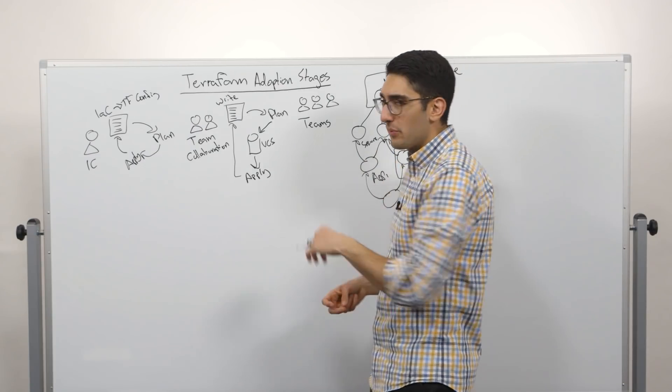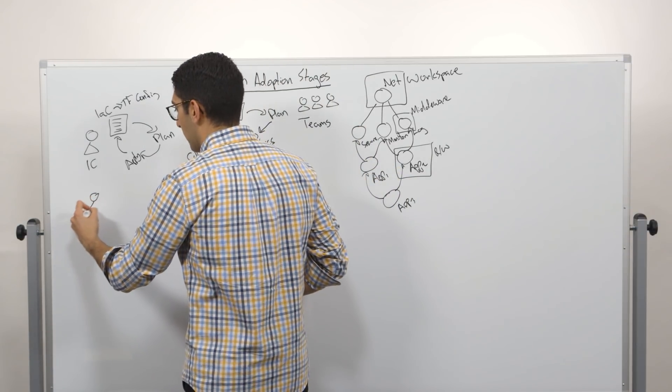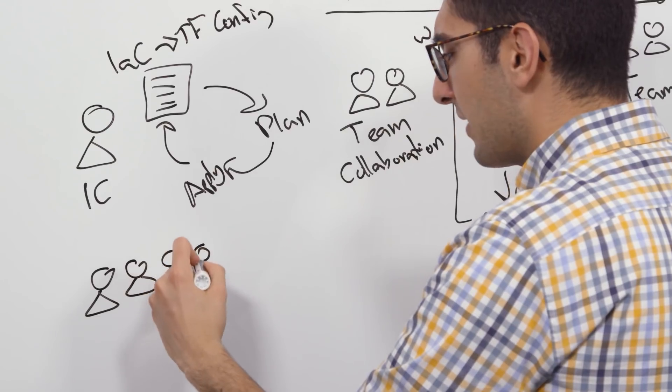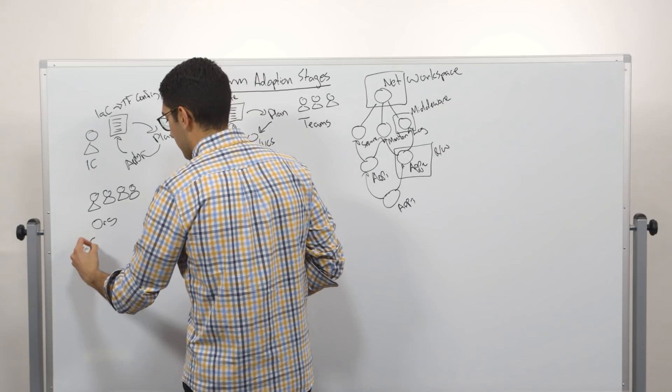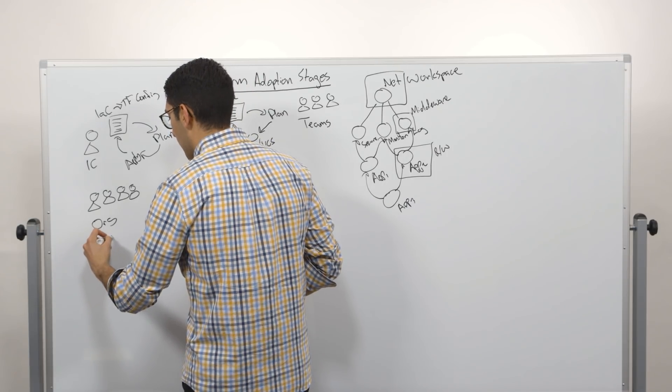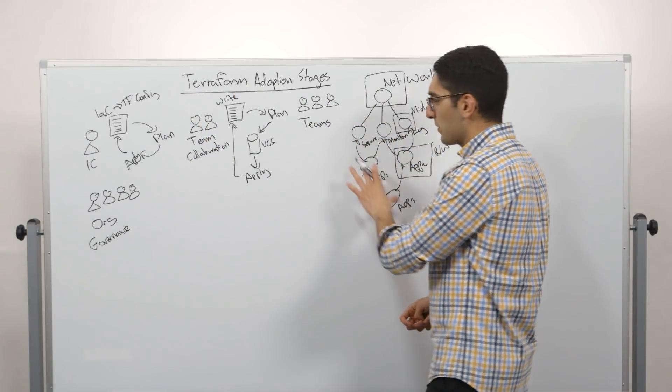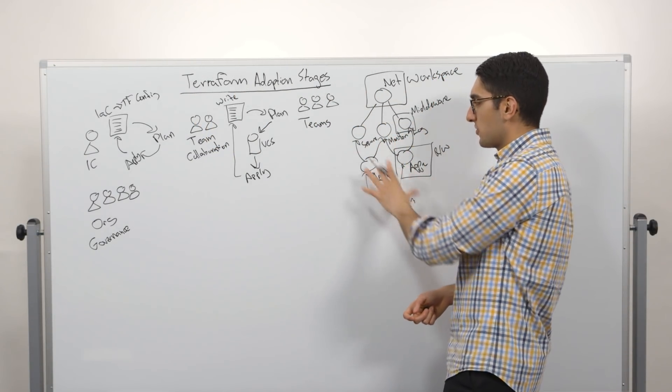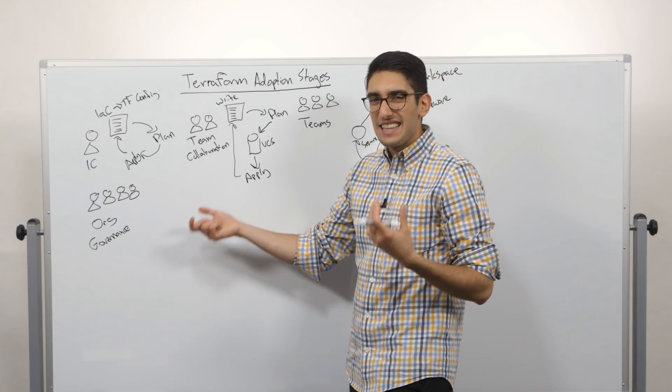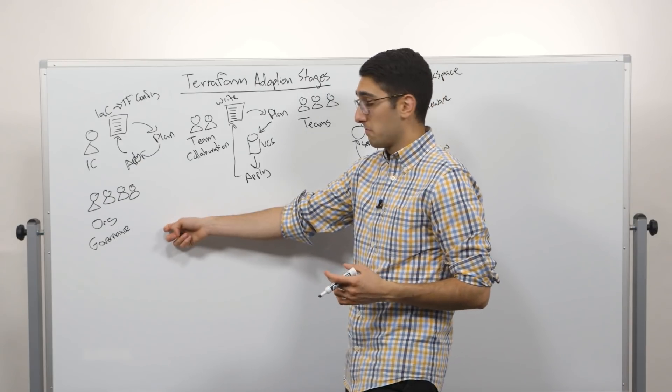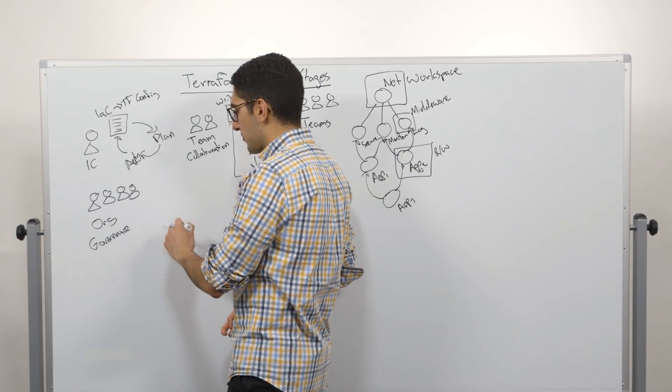What happens when we start to go even bigger? We go from multiple teams using it to sort of an organizational level deployment of it. Here at an org level, there's a different set of governance challenges. Along with that, there's also a challenge of how do we let more people be productive. At this phase, we might still have most people consuming this familiar with Terraform, whereas we go out to a full organization, it's less likely that the whole organization is Terraform enabled or that you want to make that investment to train everyone.